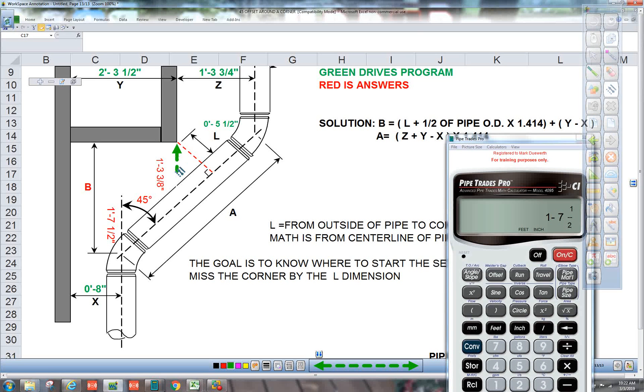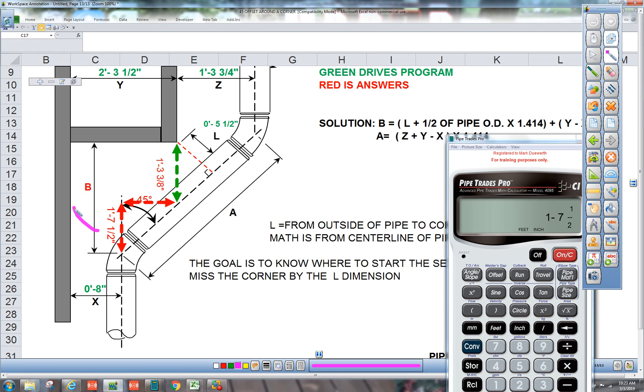We have this straight down, one foot three and three eighths. And let's make this red. And then we have another 45 triangle with two legs of one foot seven and a half. So we add the one foot seven and a half to the one foot three and three eighths. Then that will give me B. That's where to start the 45. So let's finish this now.